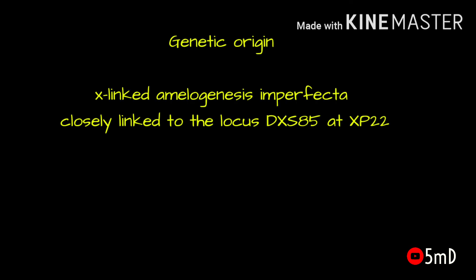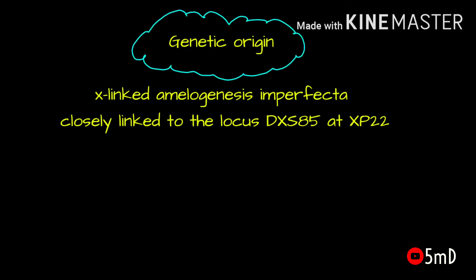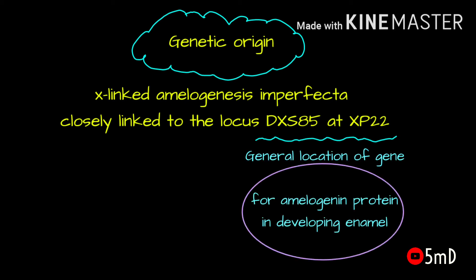The genetic origin of autosomal types is confusing and less understood, whereas the analysis of X-linked amelogenesis imperfecta has been localized to the defective gene DXS85 at XP22. This location has also been the general location of the human gene for amelogenin, which is the main principal protein in developing enamel or amelogenesis.